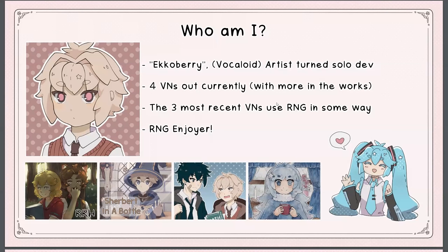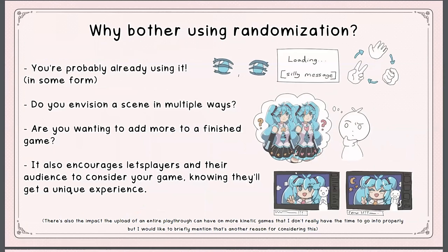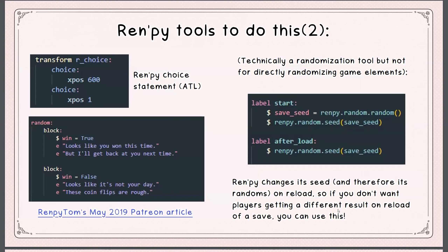So yes — the 'who am I' slide, the 'what do I mean by RNG', and the randomization tools. You can take anything from the Python random module and just slap renpy. on it and it works perfectly out of the box. We also have the renpy choice statement, which most people will be familiar with, however it isn't rollback compatible — I'll get to that a little bit later. We also have Ren'Py Tom's May 2019 Patreon article, where the block and random statements are specifically super useful for this.